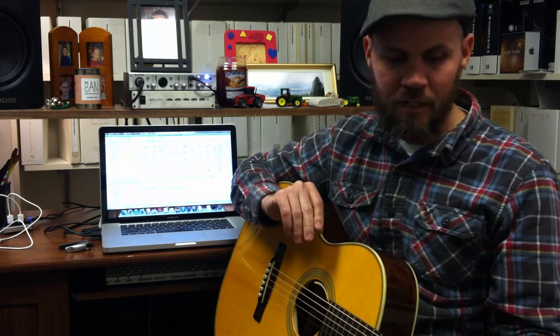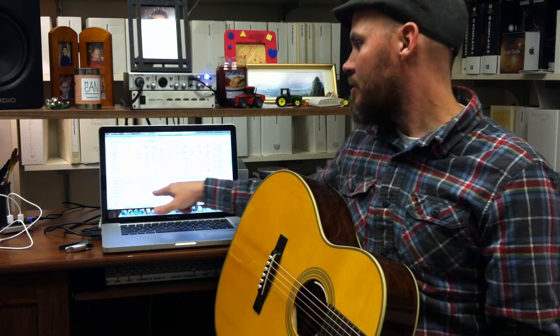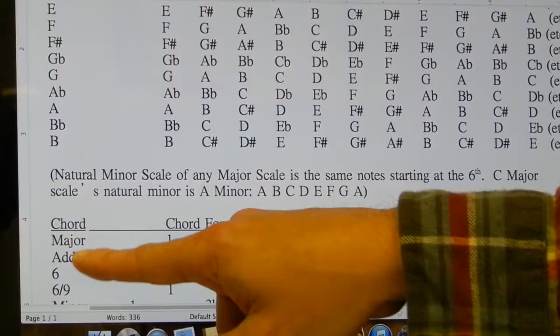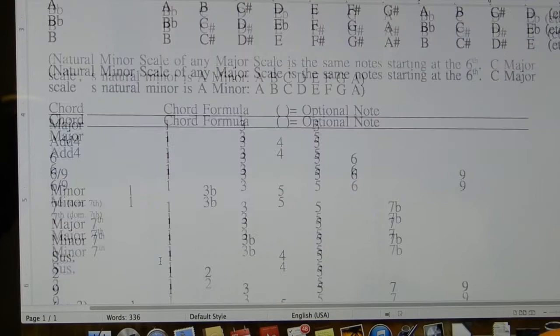So you can see the idea from this music theory chart that the same principle applies with any chord. You find out what notes, what steps in the scale, make that particular kind of chord. And then you can figure out, okay, that's the notes that make up this chord.